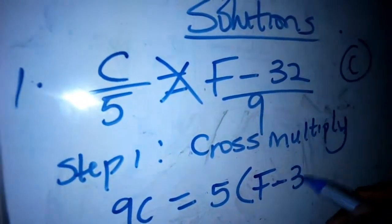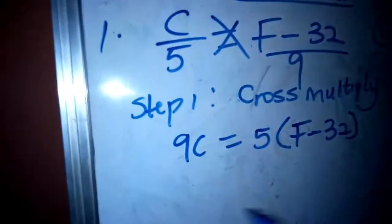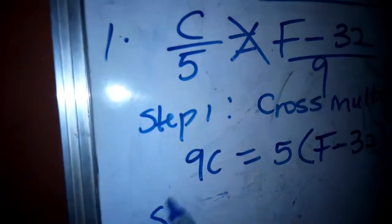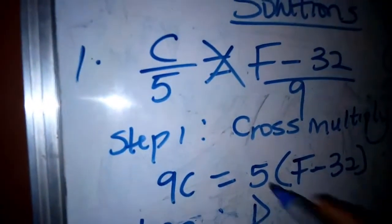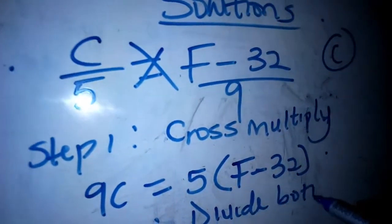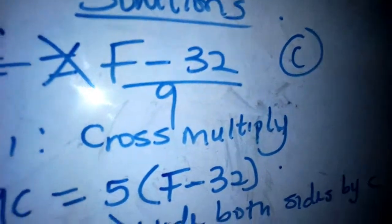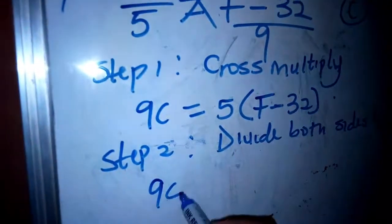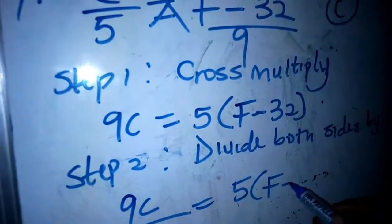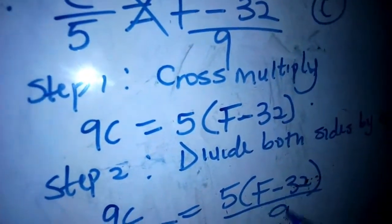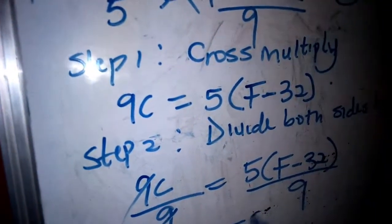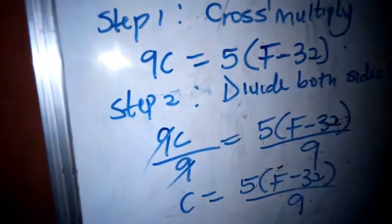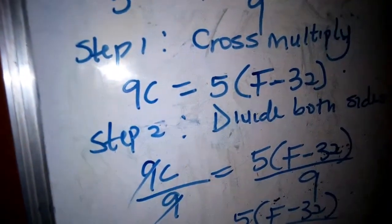Mind you, we are making C the subject of the formula. Step two: divide both sides by 9. So 9C over 9 equals 5(F minus 32) over 9. The 9s cancel, so we are left with C equals 5(F minus 32) over 9. It depends on the question — you can decide to open the bracket, giving 5F minus 160 over 9.